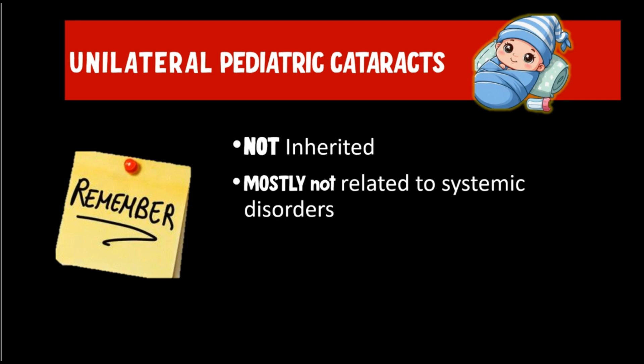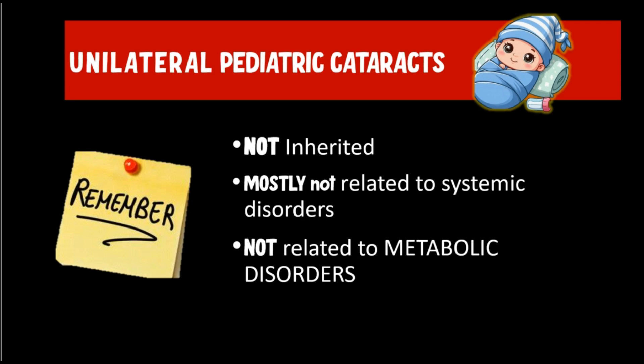So unilateral cataracts are mostly not inherited, not related to systemic disorders, and not related to metabolic disorders either. Therefore, just by identifying whether the cataract is limited to one eye or present in both eyes, you can actually exclude a lot of disorders — including systemic disorders, metabolic disorders, and even heritable causes of the pediatric cataract.